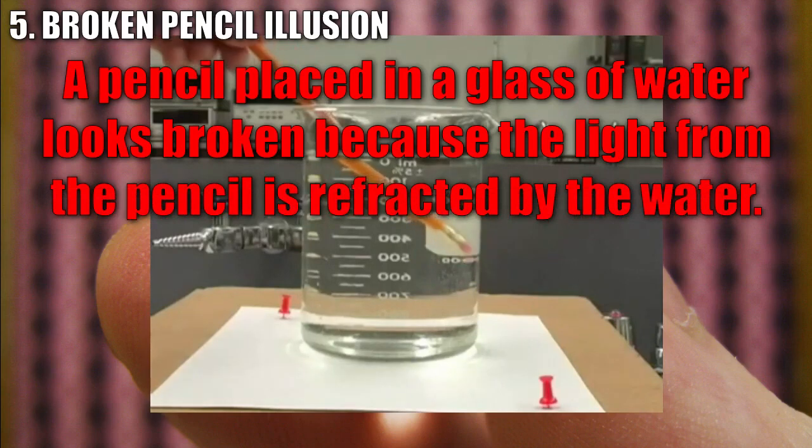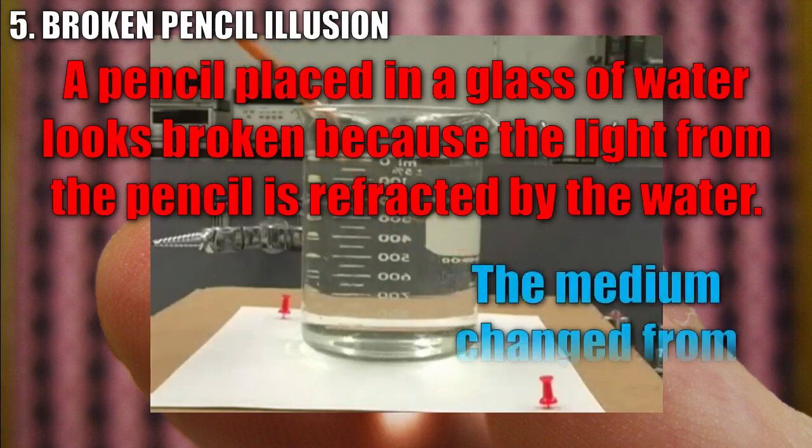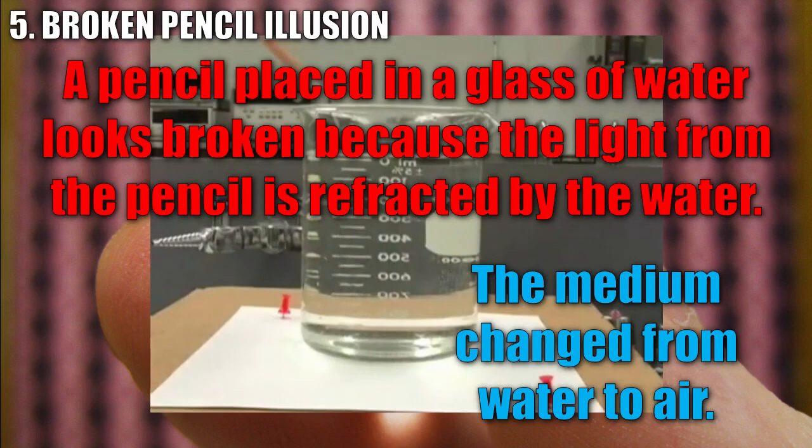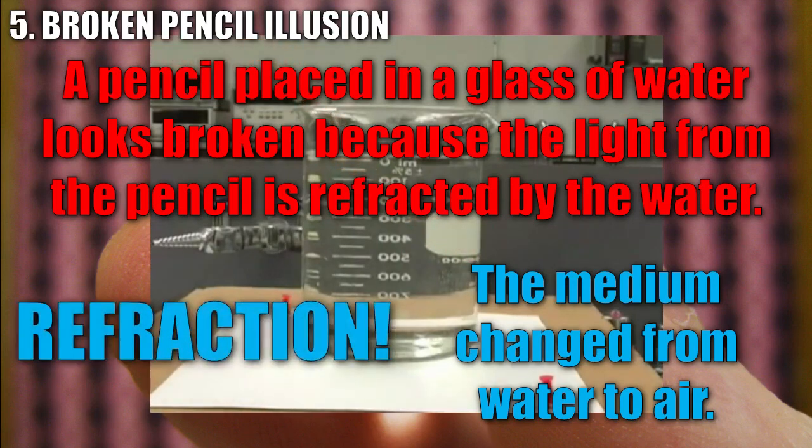A pencil placed in a glass of water looks broken because the light from the pencil is refracted by the water. In order to see the pencil, light needs to bounce off the pencil and reach our eyes. In this case, the light that's reflected off the pencil actually changes mediums, from water into air. And when this occurs, the light bends. This is refraction.